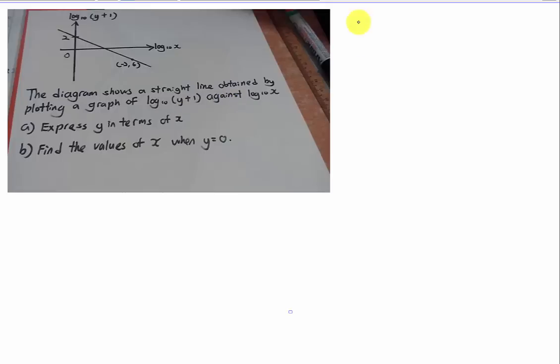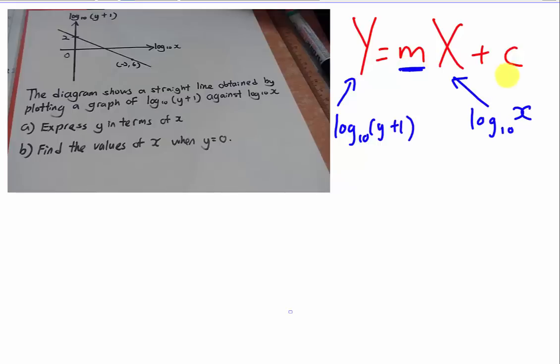About this chapter, you always need to understand y equals to mx plus c. Actually it's quite simple. You already have your y. Your y actually is given. It's log10(y+1). And also you have your x. Your x actually is log10(x). But the problem is you do not have the gradient and the y intercept. I mean the m and c. So in order to solve the part a, you have to find out your gradient and the y intercept as well.